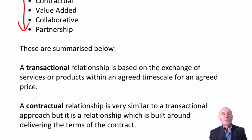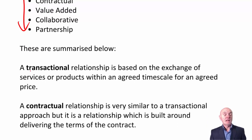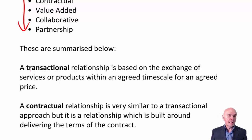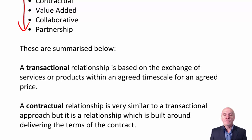Think of transactional as a once-off transaction — a single transaction where you buy once from a supplier. In many ways, they don't expect ever to see you again, and you don't really expect to see them again. It is the exchange of services or products within an agreed timescale at an agreed price. As a supplier, this is a once-off possibility of profit, so you may as well go all out to get the maximum possible price from the buyer and maybe produce products of minimum acceptable quality, because you have no ambitions for an ongoing relationship.